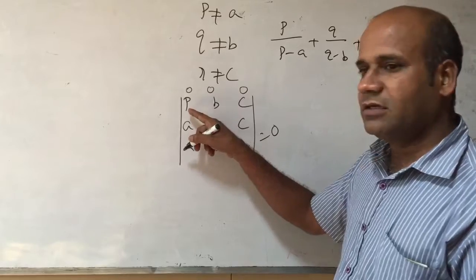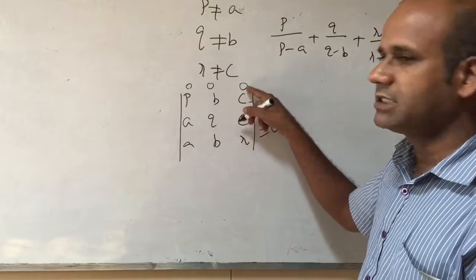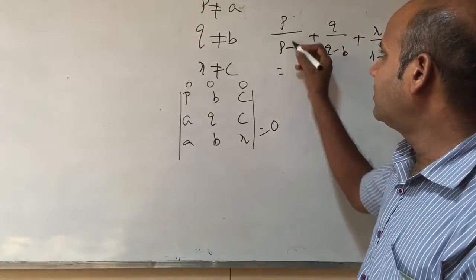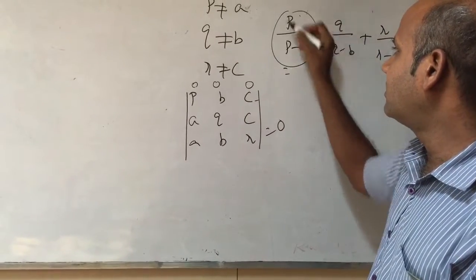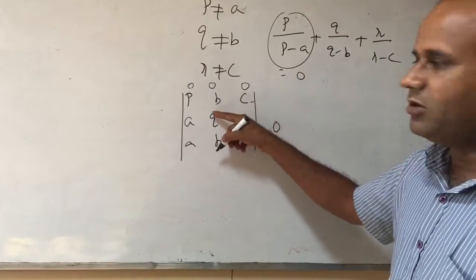Now my P is 0, the value of B is 0, and C is 0. So therefore, the value of the first term is 0, because P is equal to 0.